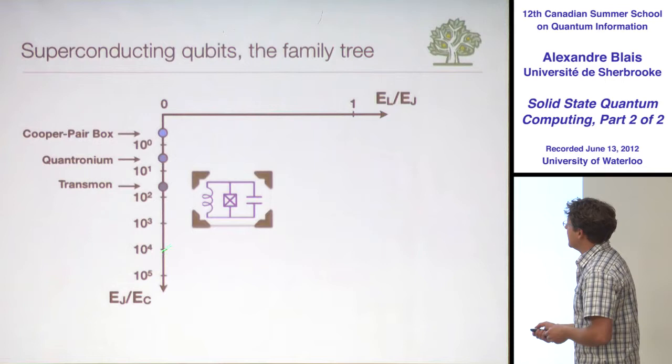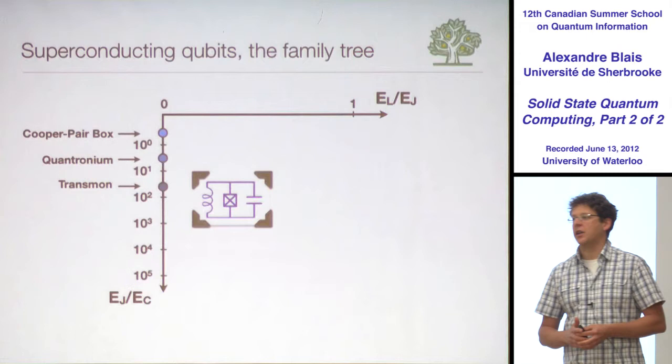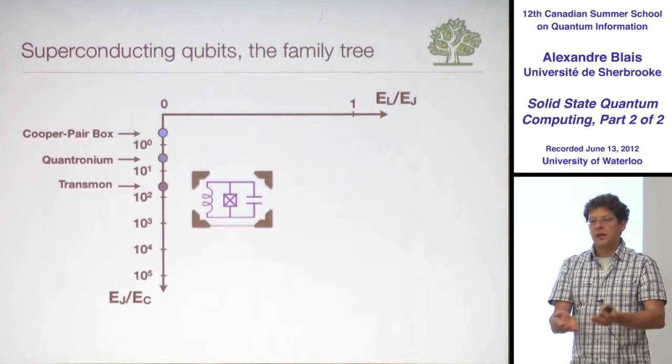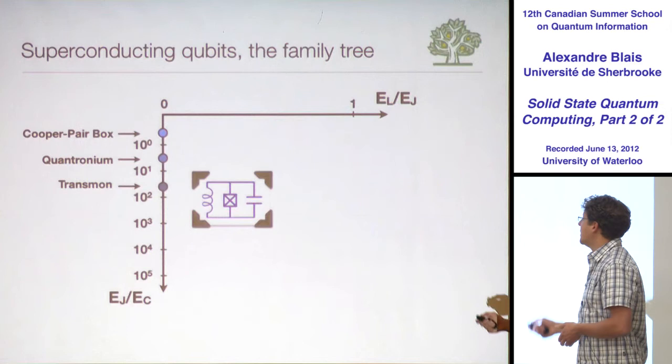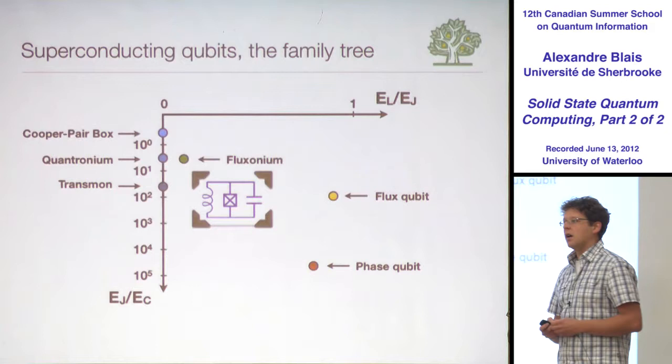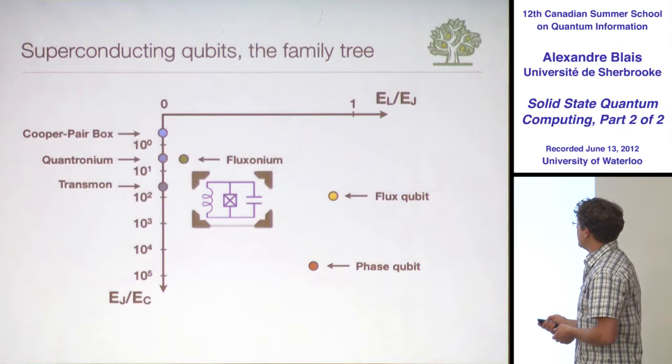There's another circuit element we didn't use, and that element is the inductance. You could also add an inductance to this qubit, which gives you a phi-squared term. Now you have a phi-squared and a cosine. You can change the inductive energy over EJ, which gives you other types of qubits — the fluxonium, the phase qubit, and the flux qubit.